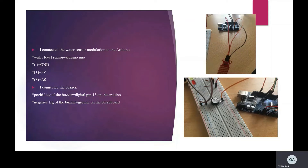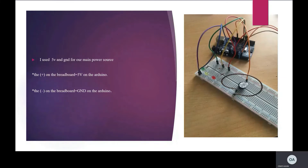Thirdly, I connected the water level sensor to the Arduino. I connected the minus (GND) pin of the water level sensor to GND on the Arduino. I connected the plus (VCC) pin of the water level sensor to 5V on the Arduino. I connected the signal pin of the water level sensor to analog pin A0 on the Arduino. Fourthly, I connected the positive leg of the buzzer to digital pin 13 on the Arduino and the negative leg of the buzzer to ground on the breadboard. For the main power source, I connected the plus rail on the breadboard to 5V on the Arduino, and the minus rail to GND on the Arduino.